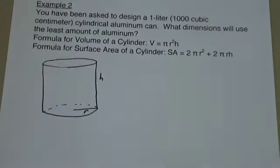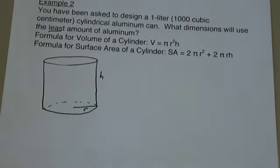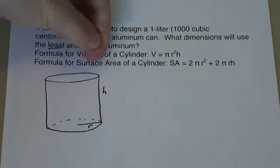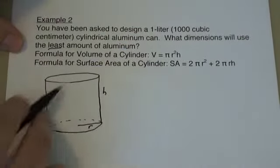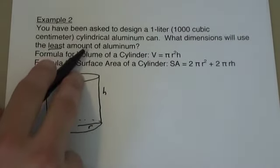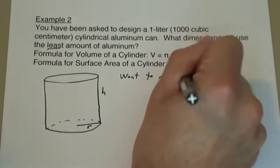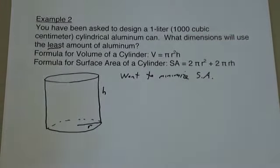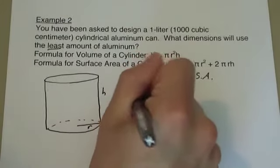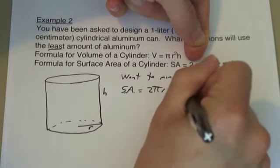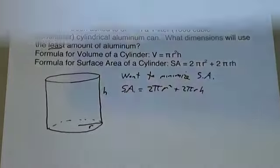Step 2: decide what you wish to optimize and write an equation in terms of the variables. What dimensions will use the least amount of aluminum? The amount of aluminum is not going to be volume — that would be the space inside the can. The amount of aluminum depends on the surface area, the area around the outside of the can. So what we wish to do is minimize the surface area. The surface area is 2πr² plus 2πrh. Step 2 is done.